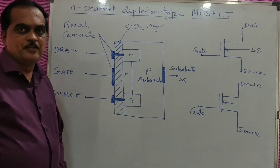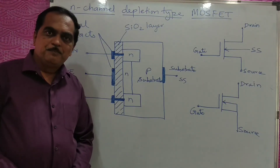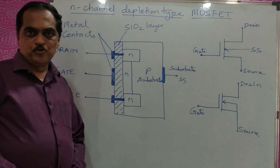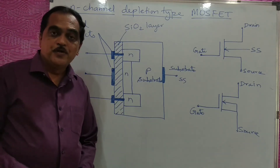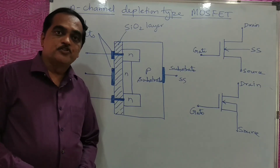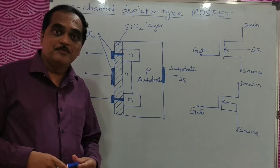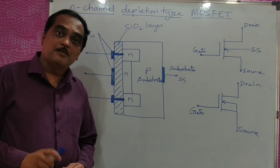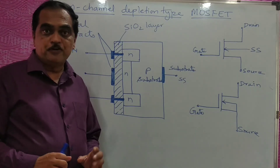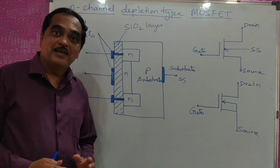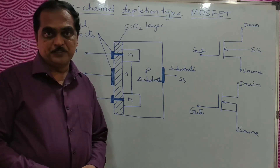Dear students, now we will see depletion type MOSFET. In depletion type MOSFET you have both N-channel MOSFET and P-channel MOSFET. First we will see N-channel depletion type MOSFET.